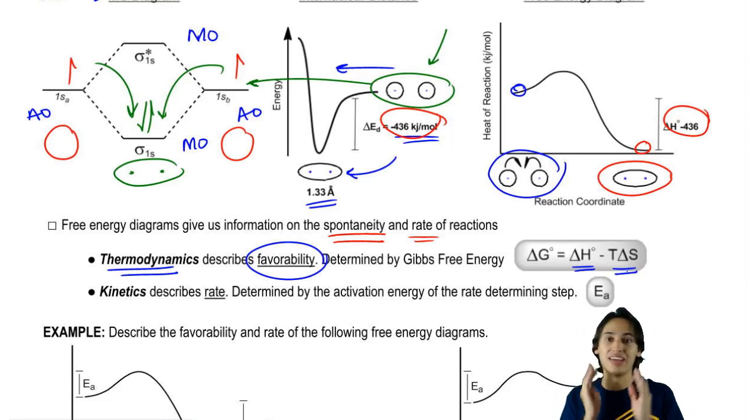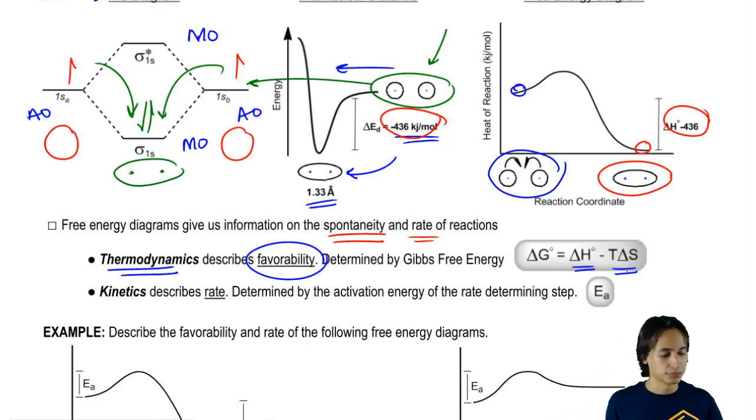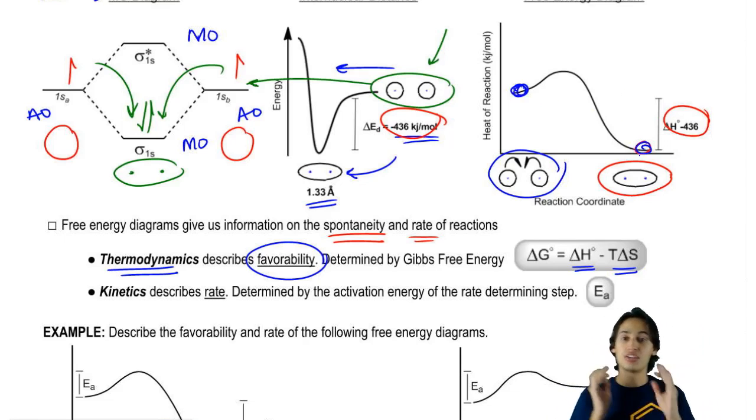Later on, I'm going to go in depth on each of these variables. But for right now, just know that that's what delta G is, it's spontaneity. Delta G is usually related by the difference in energy between the beginning and the end.